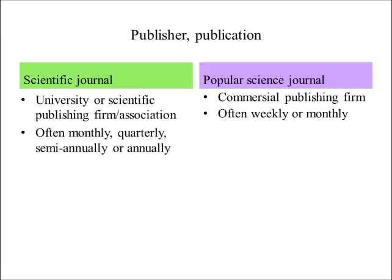The publisher of a scientific journal is a university, scientific publishing firm, or association. It is often published monthly, quarterly, semi-annually, or annually. The publisher of a popular science journal is often a commercial publishing firm, and the publication is often weekly or monthly.